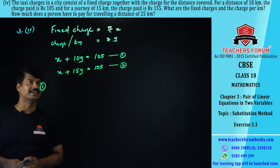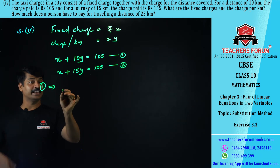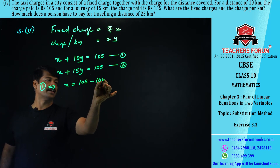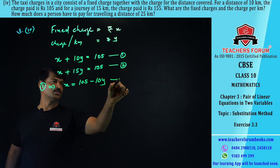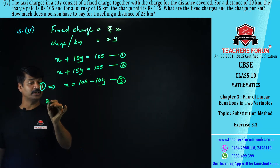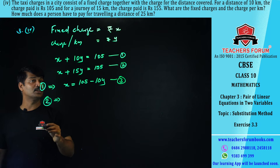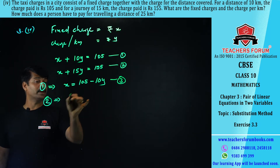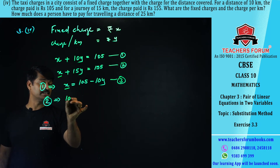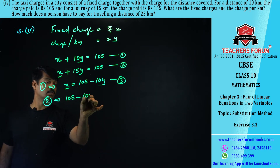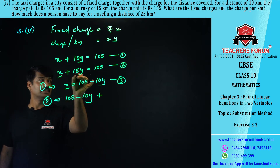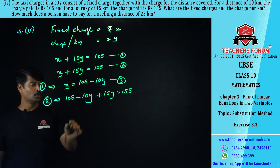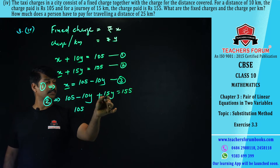From equation number one, x = 105 − 10y. Let this be equation number three. Substituting into equation number two: (105 − 10y) + 15y = 155.